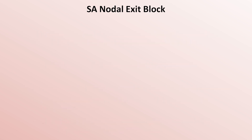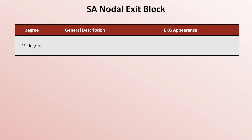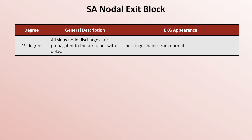There are multiple types, referred to as degrees, of SA exit block, very analogous to the three degrees of AV block. In first degree SA exit block, all sinus node discharges are propagated to the atria but with delay. However, since the sinus node itself produces no waveform and all impulses are eventually conducted, this is indistinguishable from normal on surface EKG — it can only be identified during an EP study when a wire is literally sitting in the SA node with another in the atria.